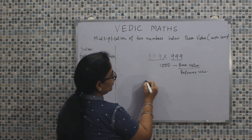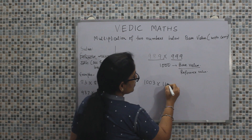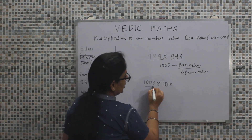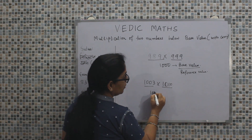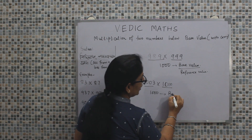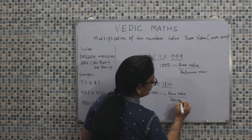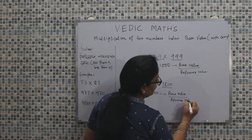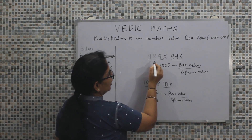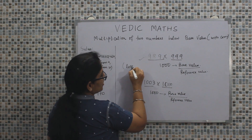Looking at another example, suppose we are multiplying 1003 into 1010. Looking into the nature of both the numbers, we find both the numbers are close to 1000. It means here also, the base value or reference value is going to be 1000. Now, identifying what is the difference between these two cases? The difference is that in the first example, both the numbers are less than the base value.